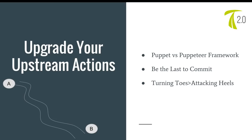This is how to upgrade your upstream actions to be more deceptive, especially on the rush or while breaking out of your end. Think about the puppet versus puppeteer framework — which do you want to be? Of course you want to be the puppeteer, and you want to be it more often. To do that, you want to be the last to commit. If you're the puck controller, you want to make that defender commit to going a certain direction, and you want to be the last to commit, because that allows you to go the other direction when he or she turns their toes so you can attack their heels. This is a component of Eric Carlsson's formula for deception.